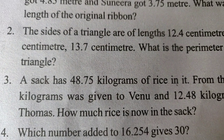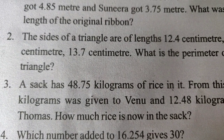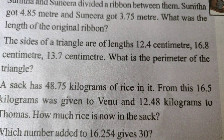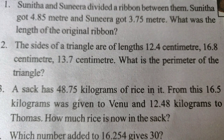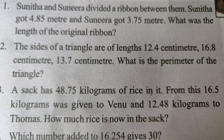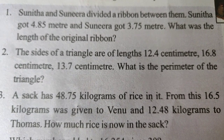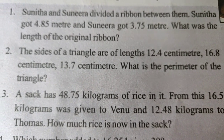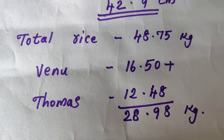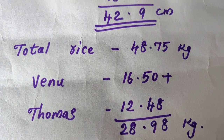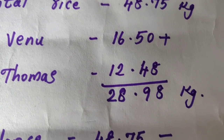Third question. A sack has 48.75 kg of rice in it. From this, 16.5 kg was given to Venu and 12.48 kg to Thomas. How much rice is now in the sack? First we find how much Venu and Thomas received in total, then subtract from the original amount.